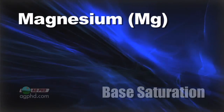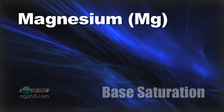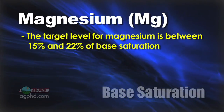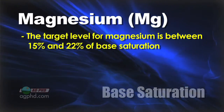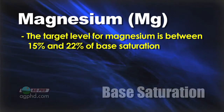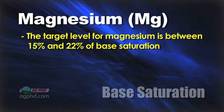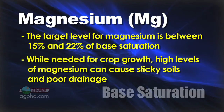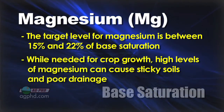Calcium should be the highest number and we want that relatively high — again 65 to 80 percent. The next nutrient is magnesium. If that number gets very high then we've got some problems. I like to see magnesium in the 15 to 22 percent range, maybe 25 — that's pushing a little bit — but you want to see it relatively low. Your crop definitely needs magnesium, but too much can be a bad thing.